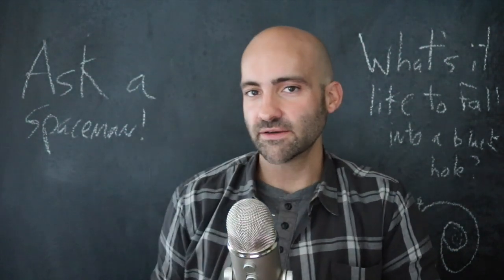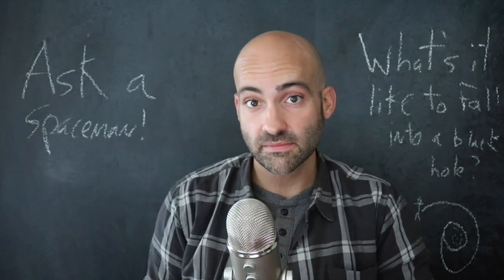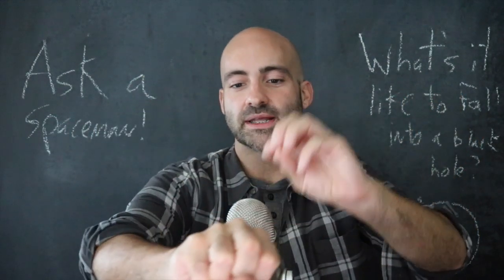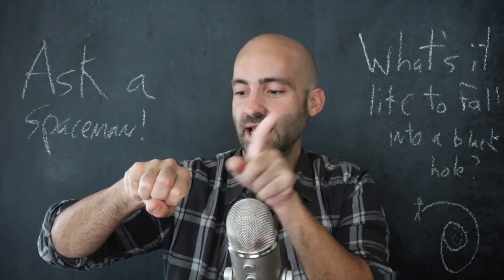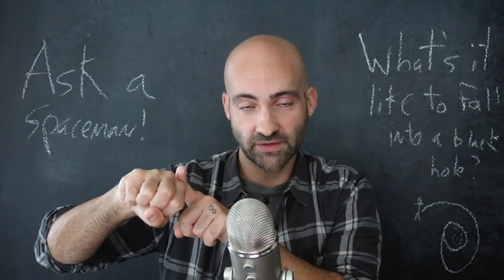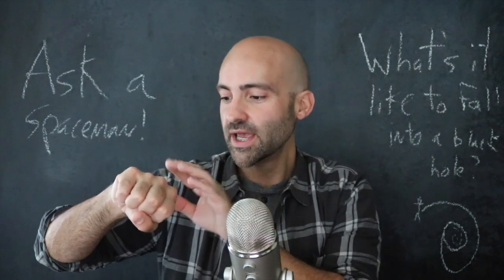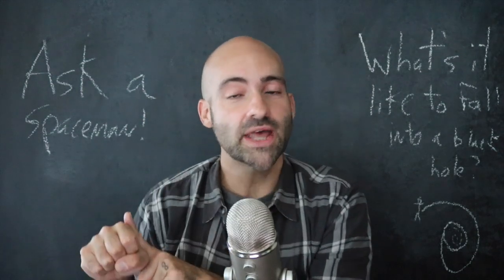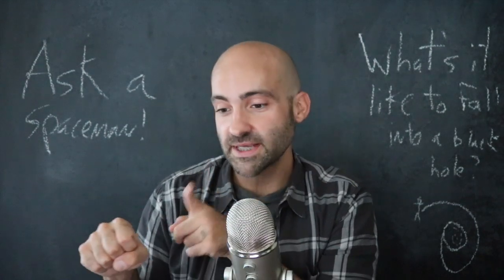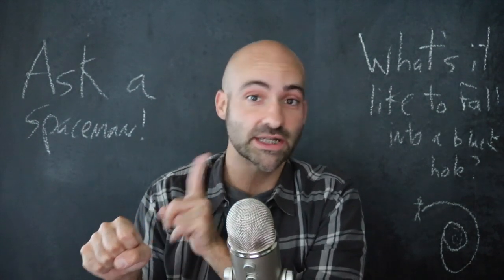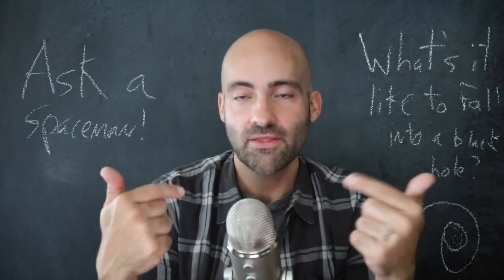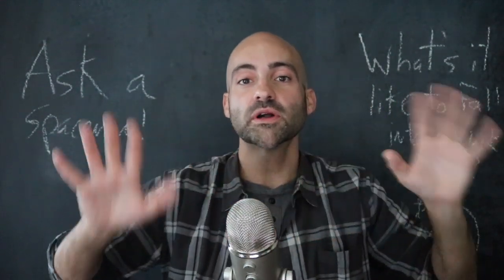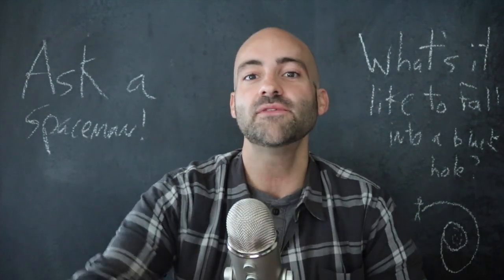From our perspective outside a black hole, nothing ever really falls in. If you're falling in and emitting light, that light has to fight stronger and stronger gravity to escape, so it gets more and more redshifted and time-dilated — you look slower and slower. Right when you cross the event horizon, the last bit of light you send out never reaches us, because space is flowing inward at the speed of light, canceling it out. We just see you getting more and more red and infinitely slowed down.